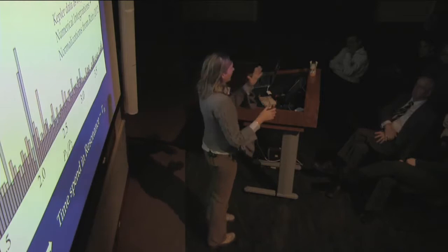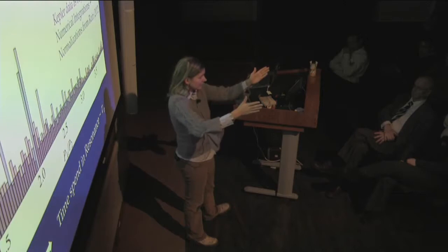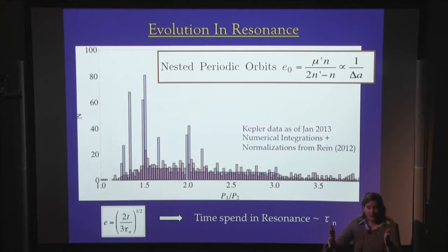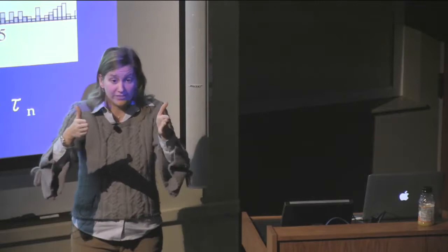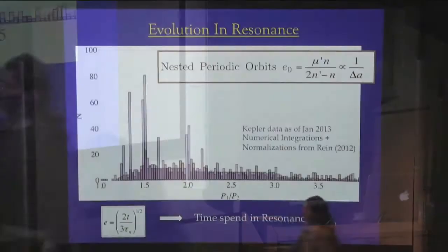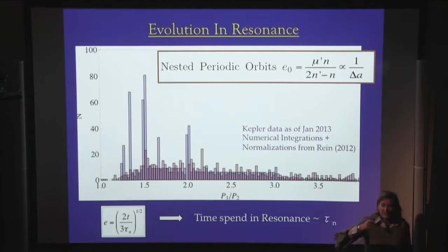As an example: say I have two planets migrating relative to one another, coming closer and caught in resonance. When I have a period ratio of 2.1 instead of exactly 2, I am already in resonance and have an eccentricity. But if I move from a period ratio of 2.1 to 2.01 — closer to exact resonance, so the delta-a away from resonance decreases — my eccentricity goes up, say from 0.01 to 0.1. The eccentricity is inversely proportional to how far you are away from exact resonance, that delta-a.